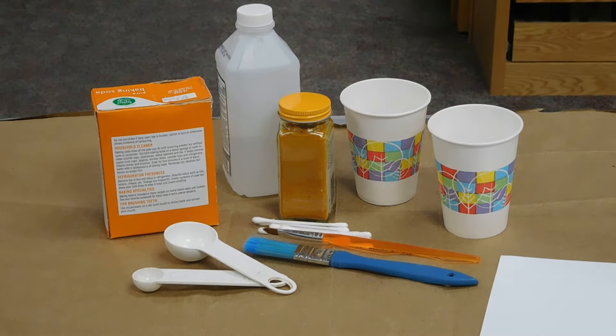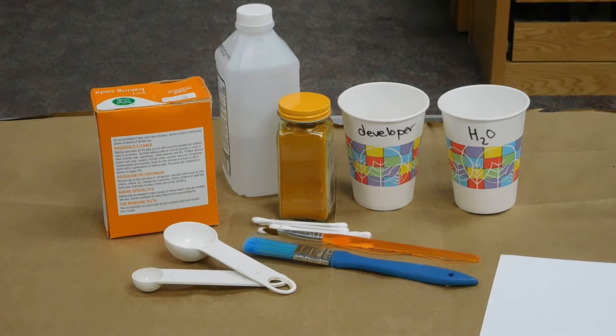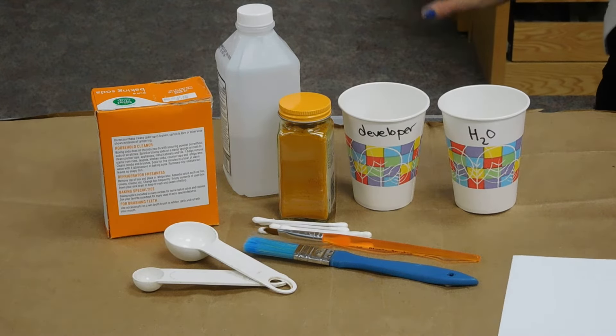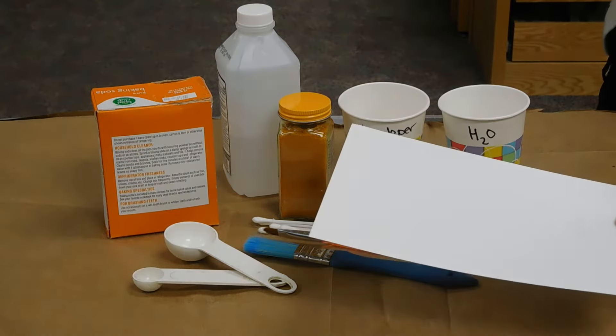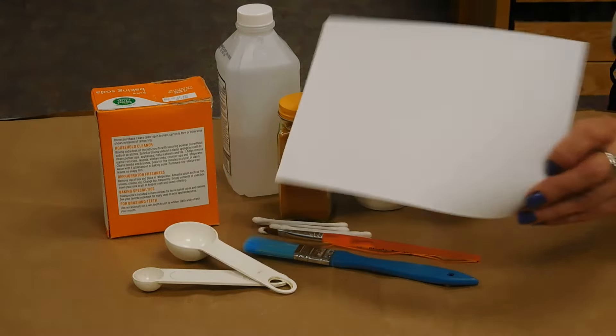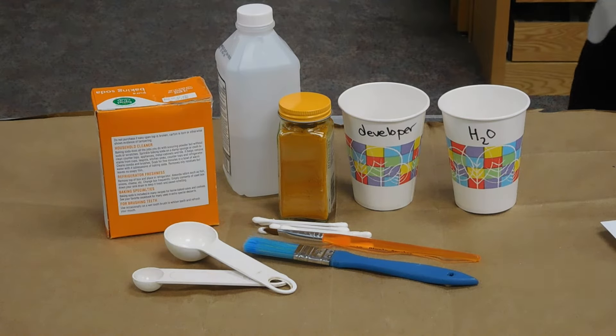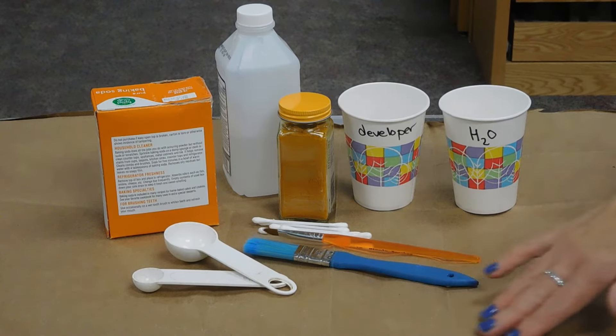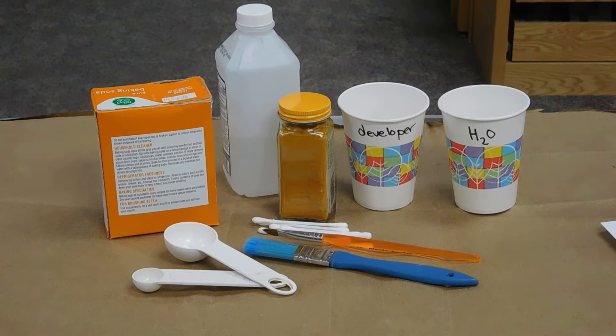I'm going to actually label them to keep straight which is which. So this is the one that the water and the baking soda will be in. This is the one that will mix the developer in. You're gonna need something to put your message on. You want a heavy paper. I've got cardstock. You can also use a heavier art paper. And you need something to protect your work area. It can be garbage bags that are taped over. It can be old newspapers. I'm using a paper grocery bag that I cut open and just flattened out.